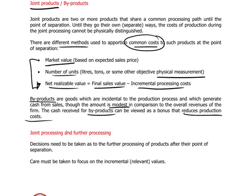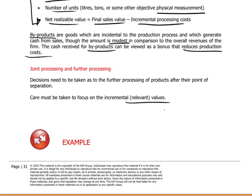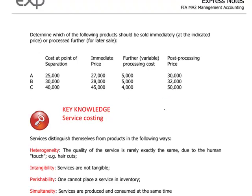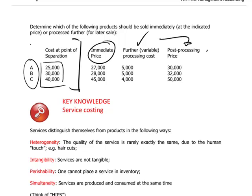Now, joint processing and further processing. It is a case of relevant costing to determine whether or not we should immediately sell a product when it emerges at the point of separation, or whether it should be further processed. And here, we can see that if we have three products with costs at the point of separation split up between them, as shown here, whether we want to sell them at some immediate price or further process them to achieve a post-processing price depends not on what the cost is at separation, because this is already considered to be a historical cost. It's forward-looking. Let's reason this one through.